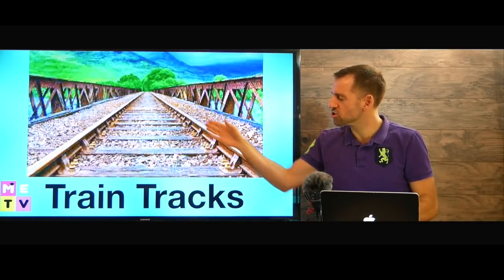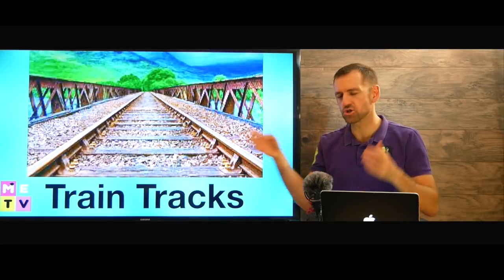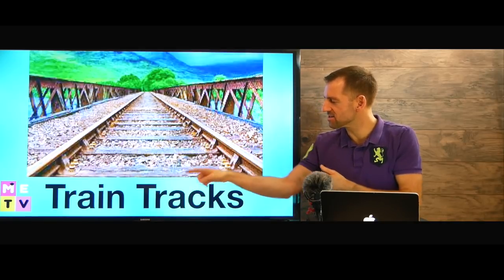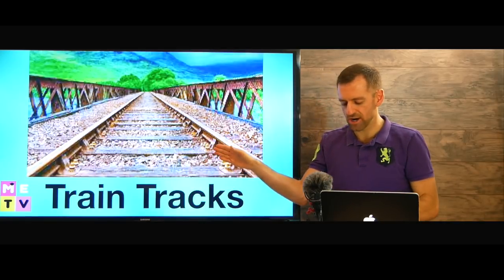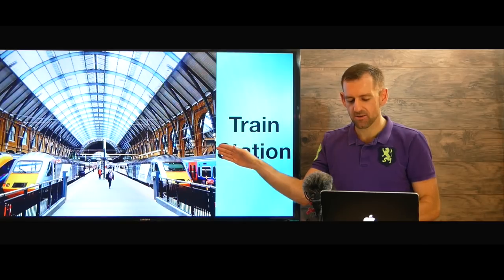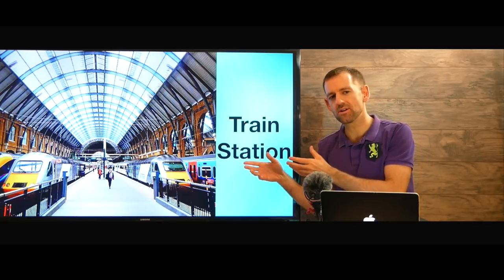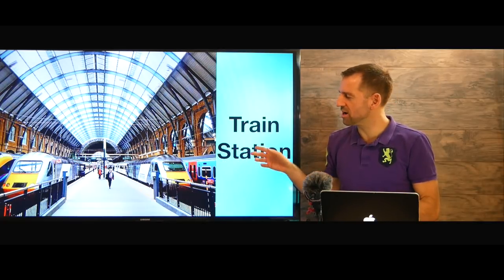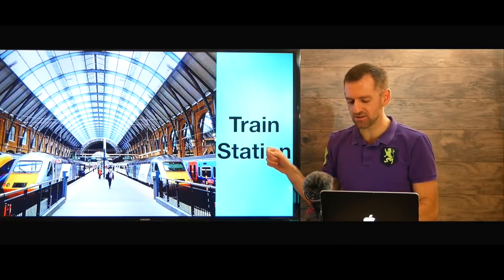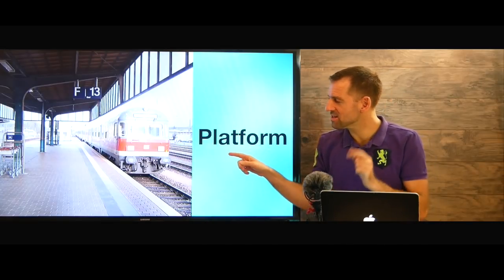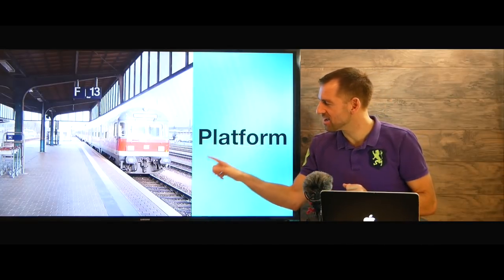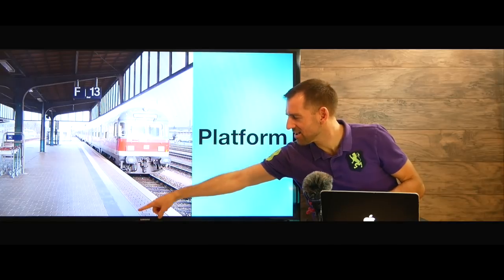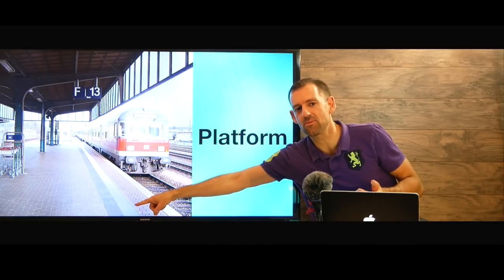Here we have tracks. A train runs on tracks — they're called train tracks. The place you go to get onto the train is called the train station. And this is really important: the platform. This thing here is called the platform.